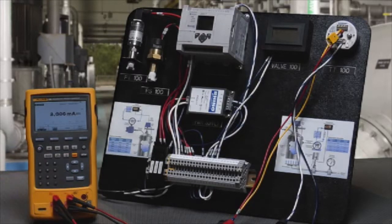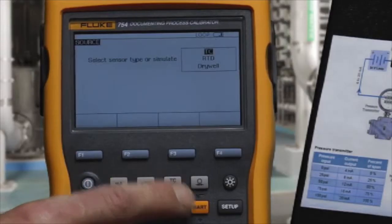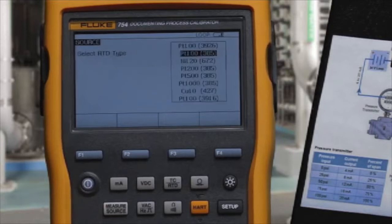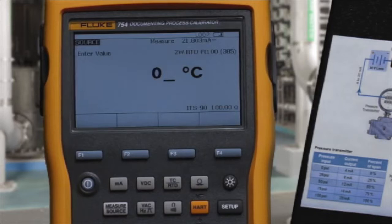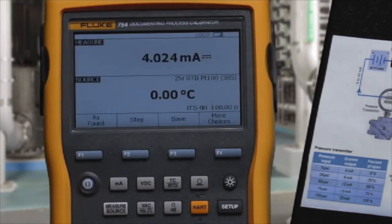Next, we want to configure the input to the transmitter, the RTD source of the calibrator. Select thermocouple RTD and RTD PT100385, input a temperature, and then move to the split screen to document the calibration.